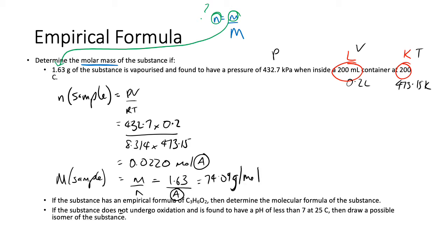If the substance has an empirical formula of C3H6O2, then determine the molecular formula of the substance. So we've got the C3H6O2. That means that the molar mass of the empirical formula, if I just add the 3 times 12, the 6 times 1 and the 2 times 16, that happens to be 74.08 grams per mole. How convenient that that happens to match the thing.